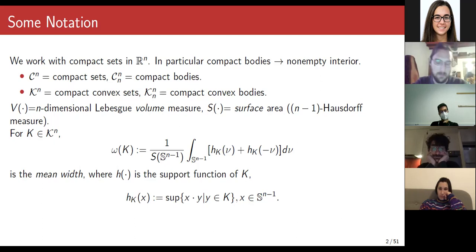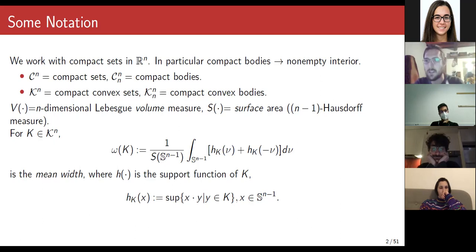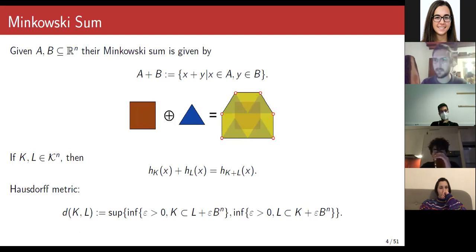Regarding support functions, there is a bijection between compact convex sets in R^n and support functions — support functions are one-homogeneous convex functions, so these two families are interchangeable. We will see very good properties in the family of convex sets, because convexity is very often not only a geometric constraint but even an algebraic constraint.